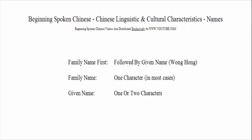In Chinese, the family name appears first, followed by given name. For example, Wang Hong. Wang is the family name. Hong is the given name.